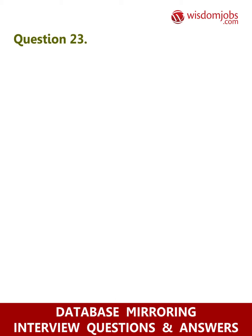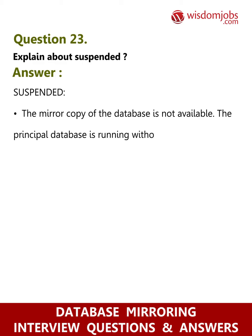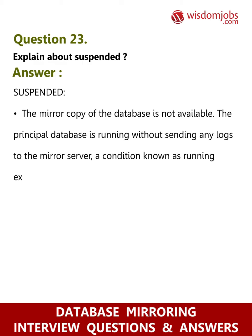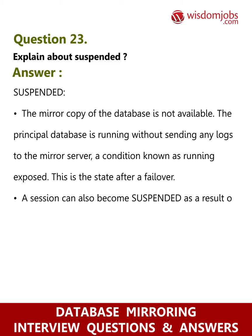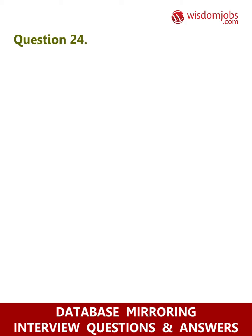Question 23: Explain the Suspended state. Answer: In the Suspended state, the mirror copy of the database is not available. The principal database is running without sending any logs to the mirror server — a condition known as running exposed. This state occurs after a failover, or it can result from redo errors, or if the administrator pauses the session. Suspended is a persistent state that survives partner shutdowns and startups.